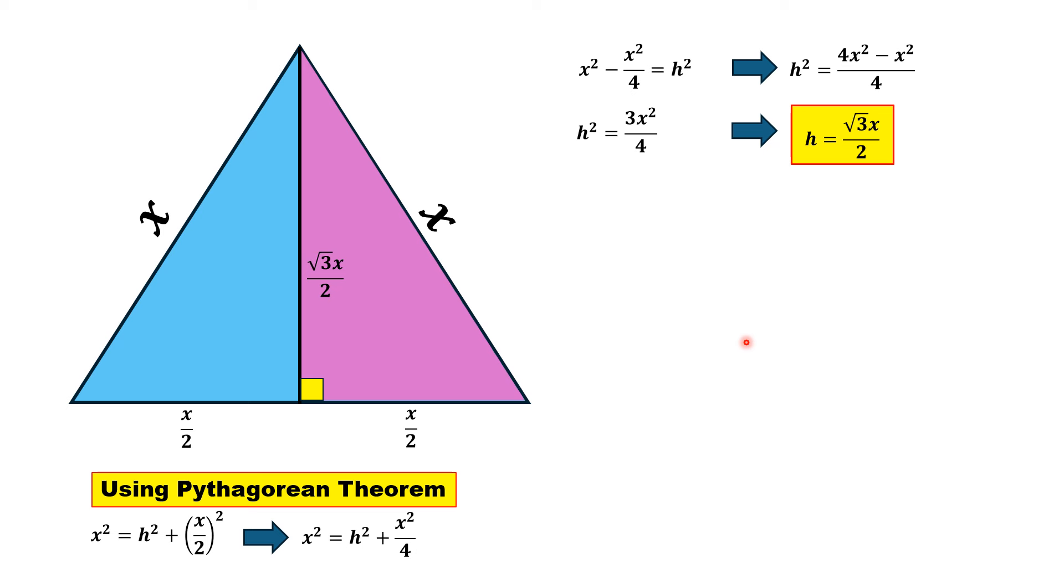Now by the given condition, area equals perimeter. Area of this triangle is half times base times height, which equals (1/2)×x×h. And perimeter equals 3x.